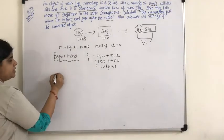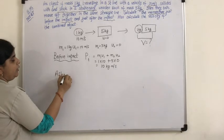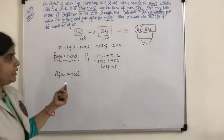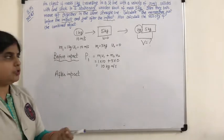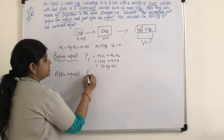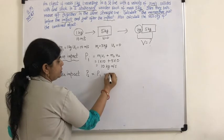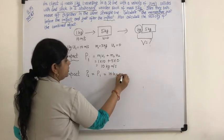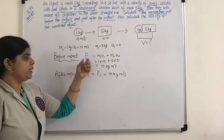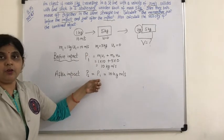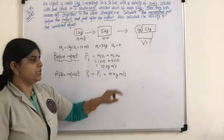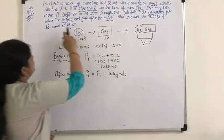What is the momentum just after the impact? After impact, we know the law of conservation of momentum. To conserve momentum with no external force acting, momentum before collision should equal momentum after collision. So P2 equals P1, which is 10 kg meters per second. So the momentum after impact equals momentum before impact because of the law of conservation of momentum.